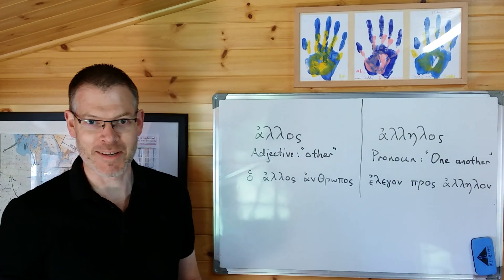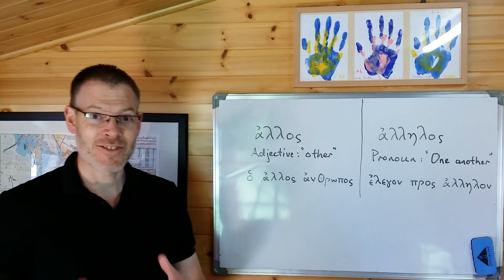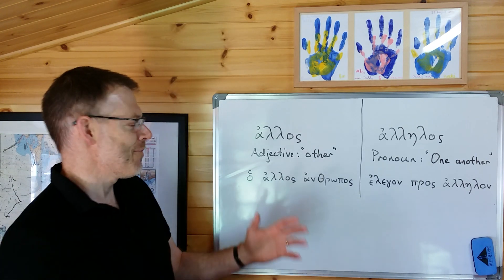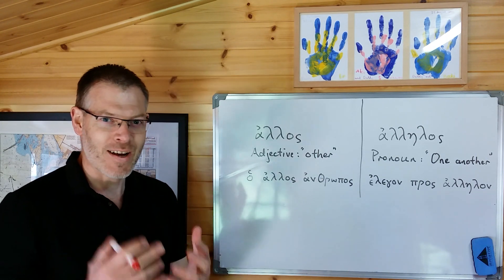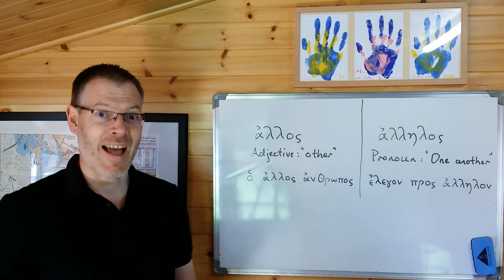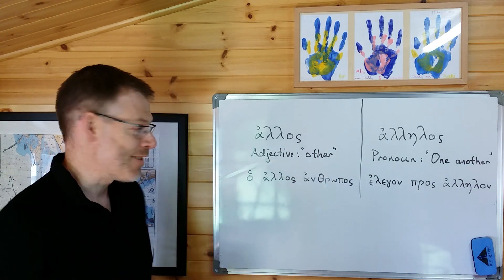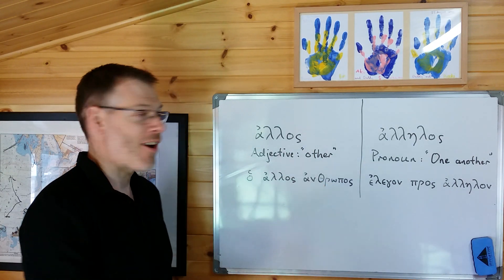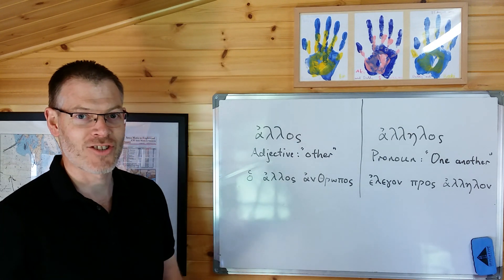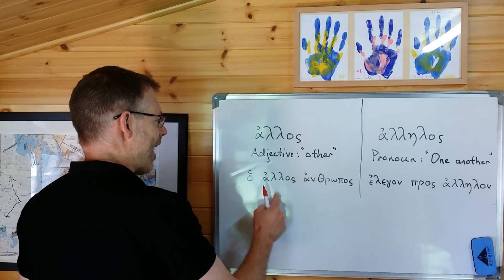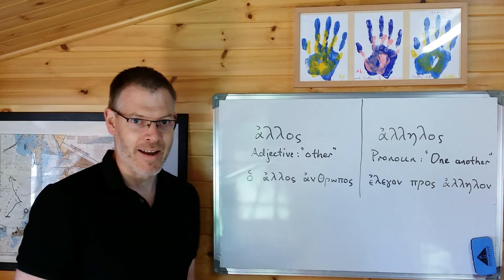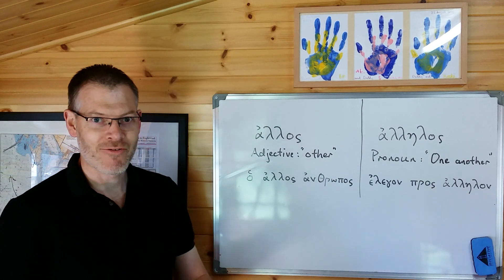Now that couldn't really be simpler, could it? As to which is a pronoun and which is the adjective — well, obviously if you think about it for like five seconds, you can see that 'other' is an adjective; it's a word that describes a noun, and that's how it's used in sentences, just like an ordinary adjective: alos anthropos — the other man. Really, really straightforward.